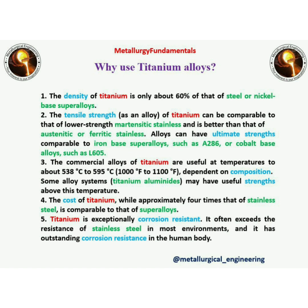Why use titanium alloys? The density of titanium is only 60% of that of steel or nickel-based super alloys. The tensile strength of titanium is comparable to lower-strength martensitic stainless steel and is better than austenitic and ferritic stainless steel. Titanium alloys have ultimate strengths comparable to iron-based or cobalt-based super alloys. Commercial alloys are useful at temperatures of about 538 to 595°C depending on composition, and some alloys like titanium aluminides may have useful strengths above these temperatures.